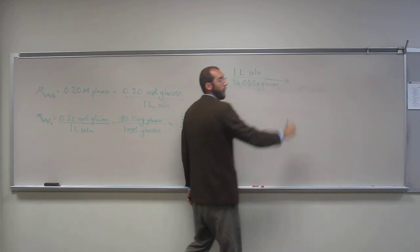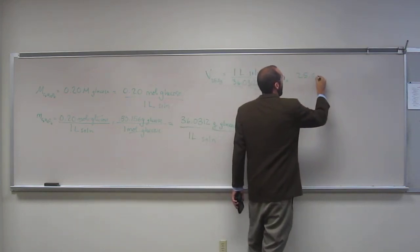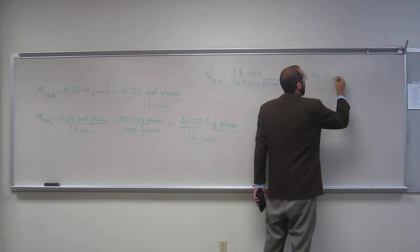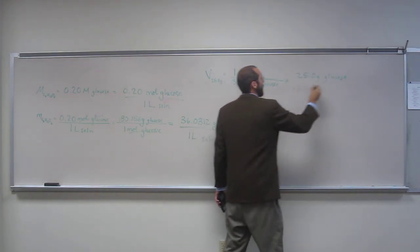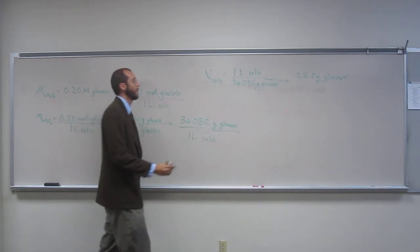We know one liter of solution gives us 36.0312 grams of glucose. So what we're looking for, how many grams? 25.0 grams. How did I know to do it that way? Because I wanted to cancel my units. Okay?